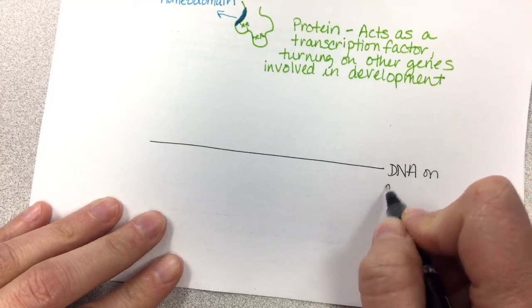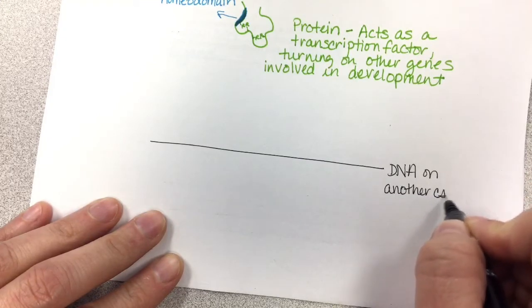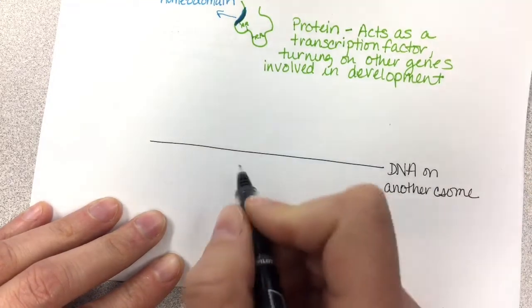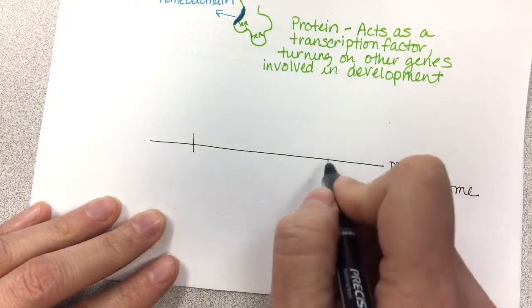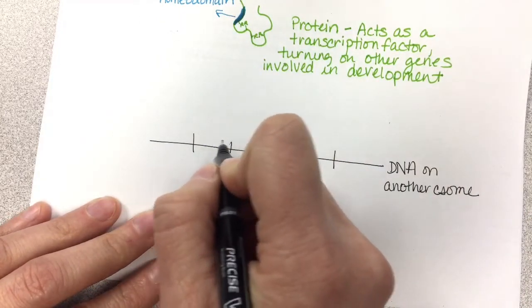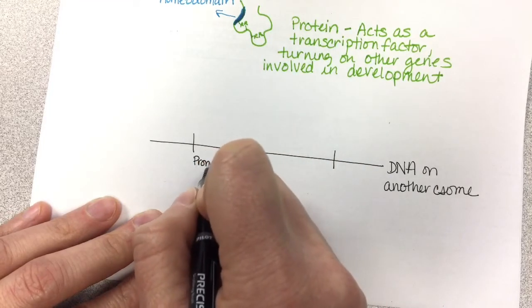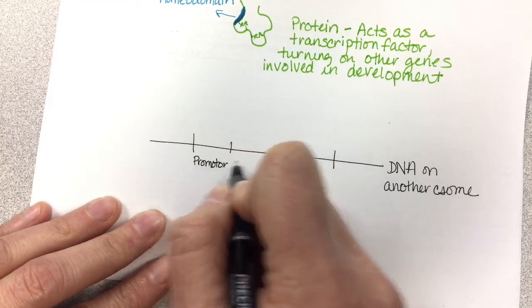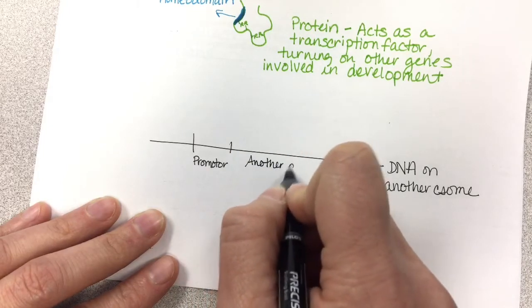This is DNA in another chromosome. Here's your gene, and here is the promoter right here. This is another gene involved in development.